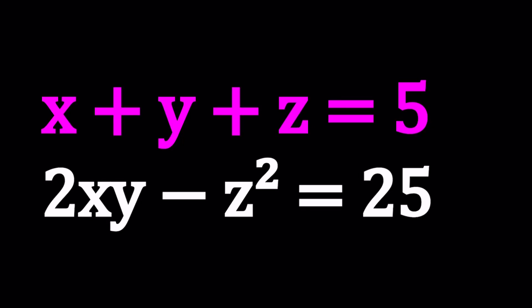Hello everyone, in this video we're going to be solving a nice polynomial system. We have x plus y plus z equals 5 and 2xy minus z squared equals 25. And we're going to be solving for x, y, and z values.